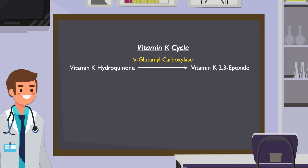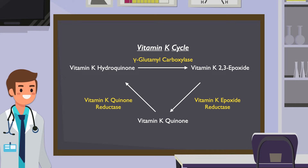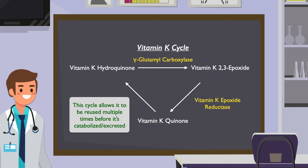Vitamin K-hydroquinone gets oxidized to vitamin K-2,3-epoxide by the enzyme gamma-glutamyl carboxylase. Then vitamin K-2,3-epoxide is reduced to vitamin K-quinone by the enzyme vitamin K-epoxide reductase. In the final step, vitamin K-quinone gets reduced back to hydroquinone by vitamin K-quinone reductase. Although vitamin K isn't well stored in the liver, this cycle allows it to be reused multiple times before it's catabolized and excreted.